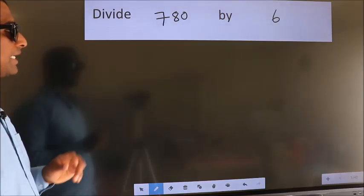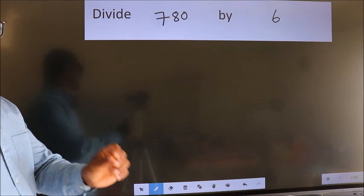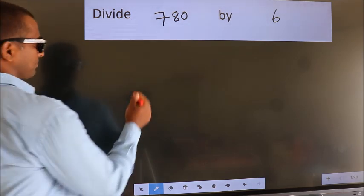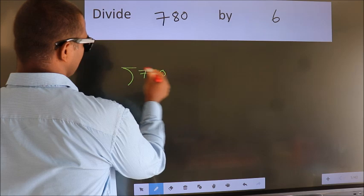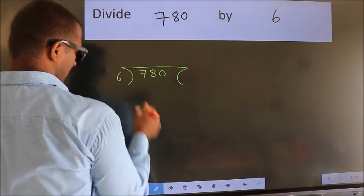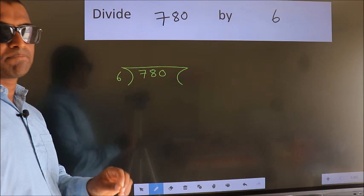Divide 780 by 6. To do this division, we should frame it in this way. 780 here, 6 here. This is your step 1.